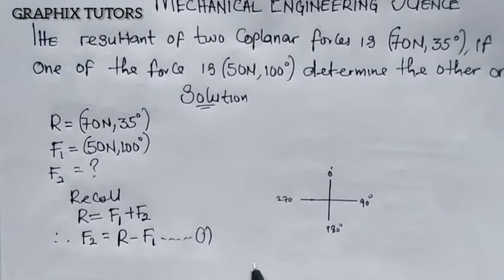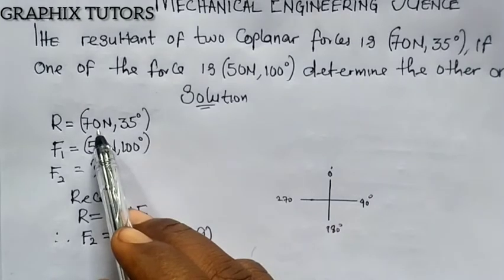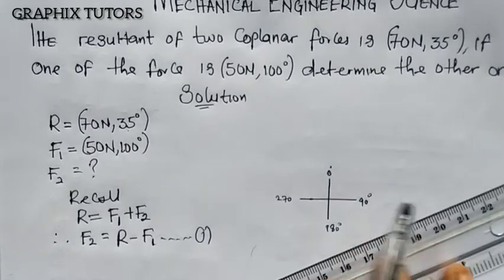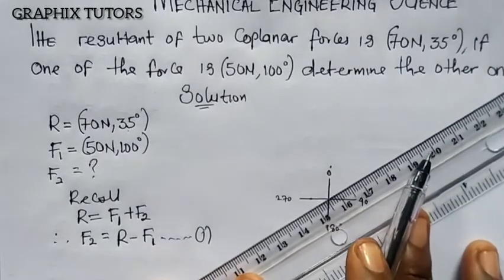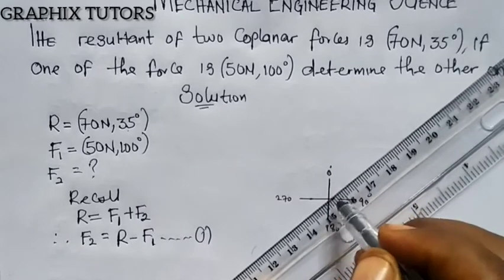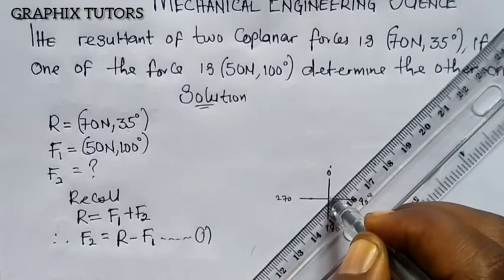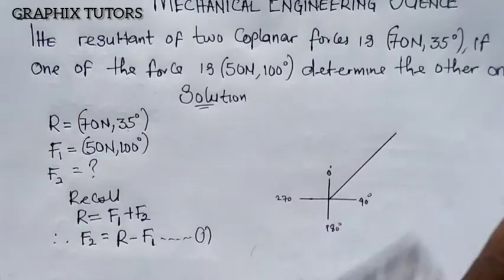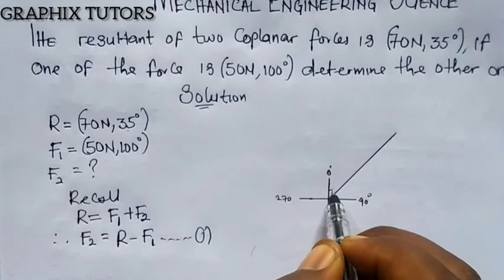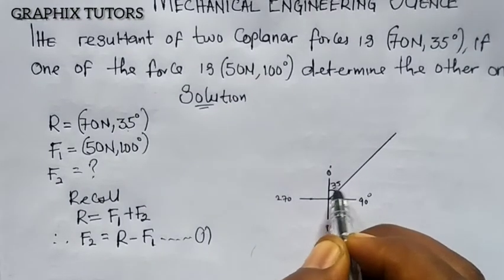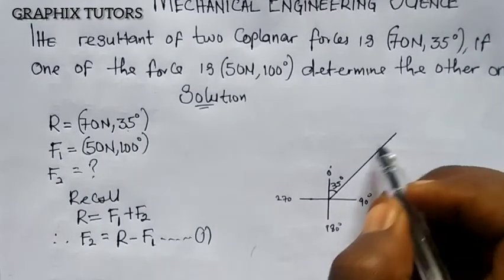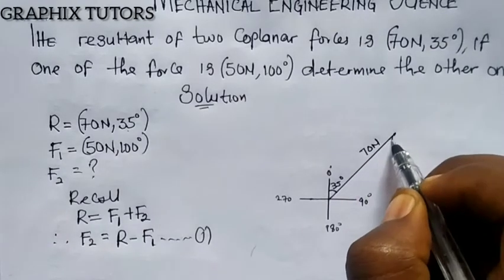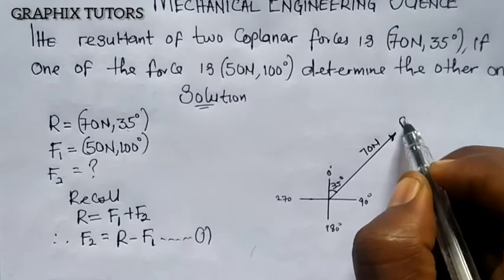We are told the resultant force is 70 newton, so the magnitude is 70 newton and the direction is at 35 degrees. At 35 degrees it falls somewhere around here, and the angle between the vertical and the force is 35 degrees. The magnitude is 70 newton — this is my resultant force.